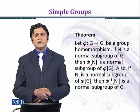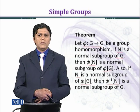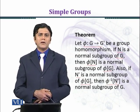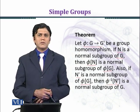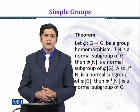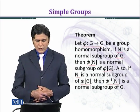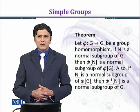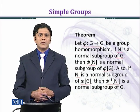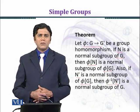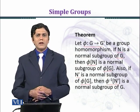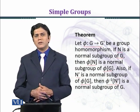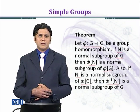When we introduced homomorphism, we saw that the image of a subgroup of G is a subgroup of G prime. So if you have a subgroup N of G, then the image phi(N) is a normal subgroup of phi(G). We now extend this to normal subgroups.